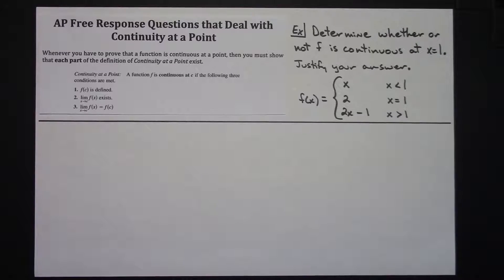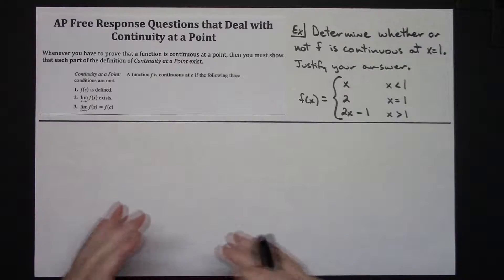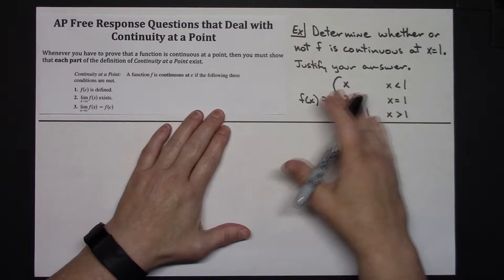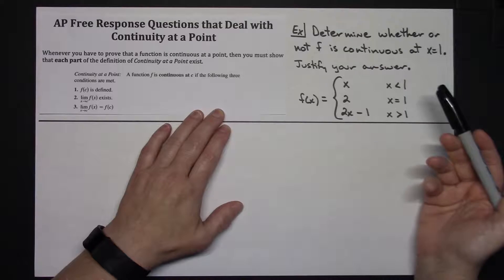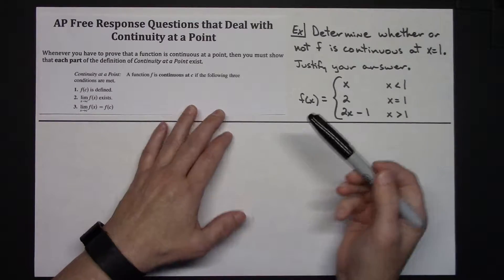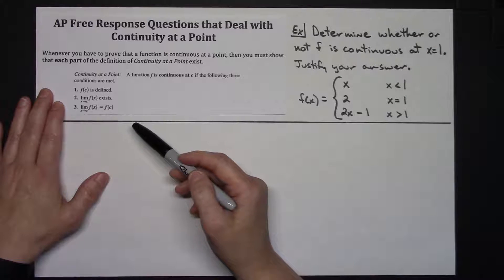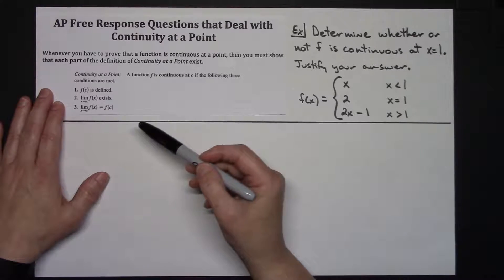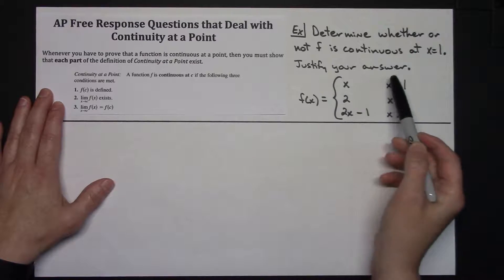Today we're going to take a look at continuity at a point. This is a pretty typical AP free response question. They will give you some type of function and then ask you to determine whether or not the function is continuous at some given point along that function. Now if you remember your definition of continuity at a point, that's how you're going to want to answer this question, because every time they always ask you to justify your answer.